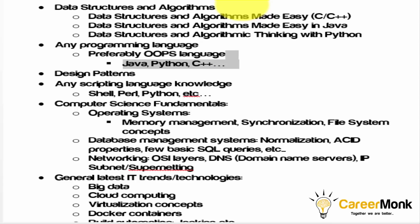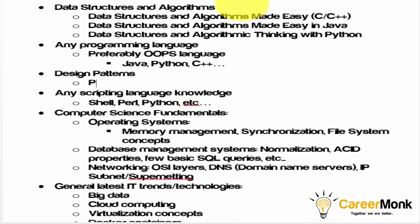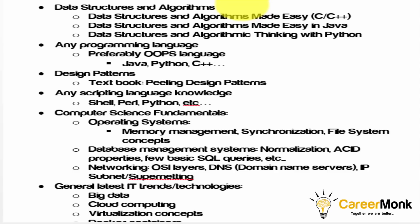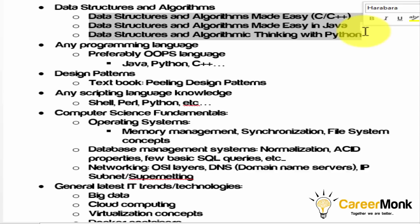For OOP languages, you don't need any specific book. Just understanding the basics — inheritance, polymorphism, and core OOP concepts — is enough. You don't need to remember function names or class names for interviews; understanding the usage and running sample programs is sufficient. For design patterns, the textbook is 'Peeling Design Patterns,' which covers design interview questions specifically. If you want a very deep understanding, you can refer to the Gang of Four textbook.